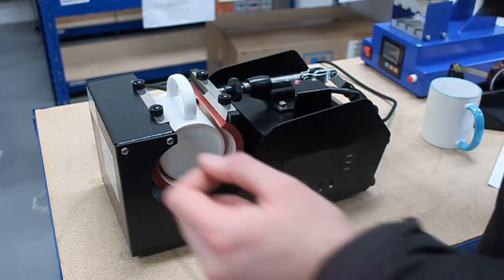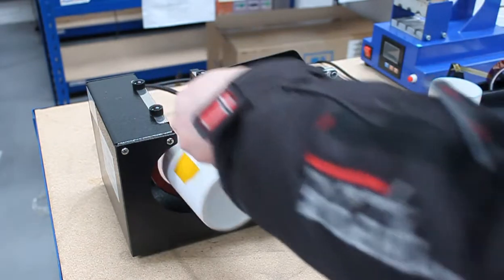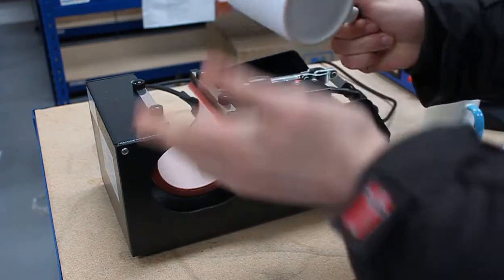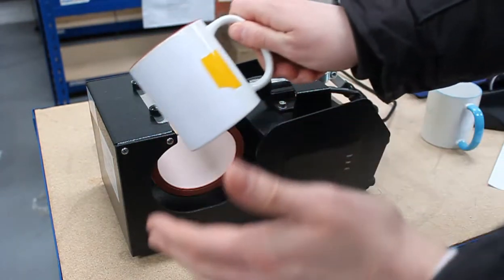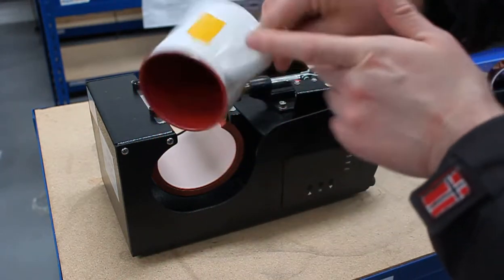Once the timer is done, switch off the machine. Remove your mug. Make sure that you don't touch any of the outside of the mug. You can grab by the handle, the handle should be cold.